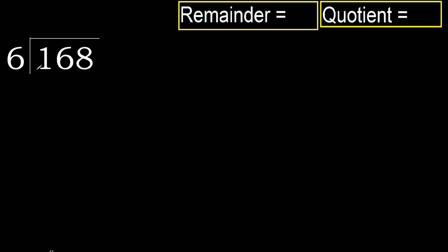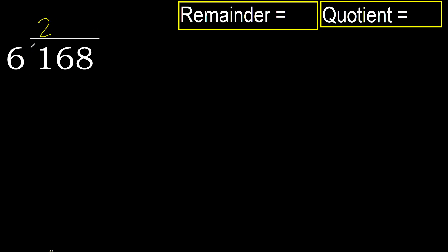168 divided by 6. 1 is less, therefore next. 16 is not less, therefore with 16: 6 multiplied by which number is nearest to 16 but not greater? 6 multiplied by 3 is 18, which is greater. 6 multiplied by 2 is 12, which is not greater. Subtract, next.